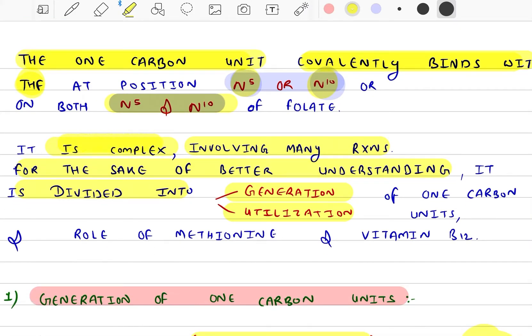It is complex, involving many reactions. To understand this, we will divide it into two parts: Generation and Utilization. At the end, we will also study role of Methionine and Vitamin B12.